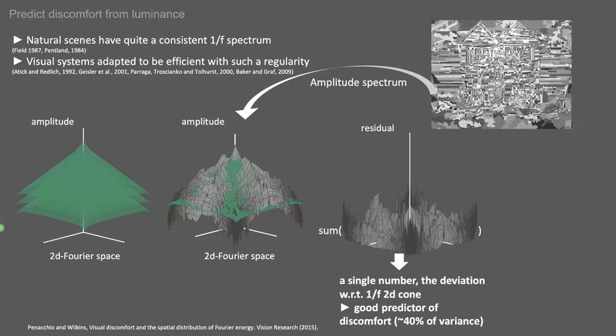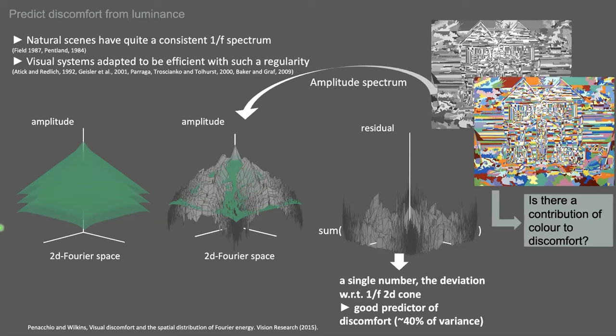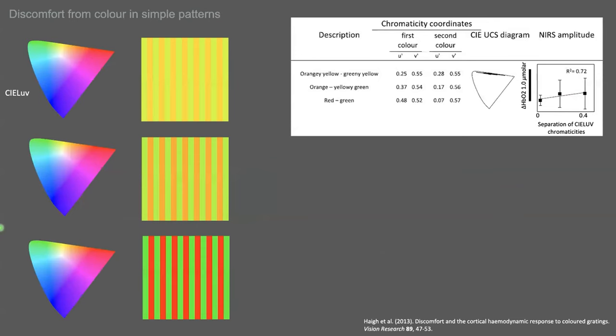So this metric, simple metric, however, is only based on luminance. So what about the large color contrast in the original image? Does it contribute to discomfort? So we know that this is the case in simple geometrical stimuli.